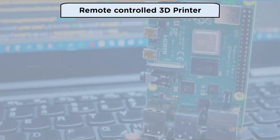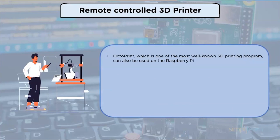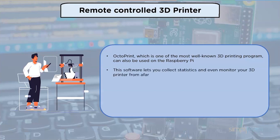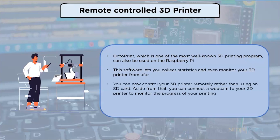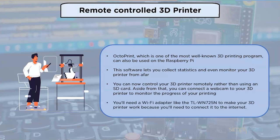Remote control 3D printer: OctoPrint, one of the most well-known 3D printing programs, can be used on Raspberry Pi. This software lets you collect statistics and monitor your 3D printer from afar. You can now control your 3D printer remotely rather than using an SD card. You can also connect a webcam to monitor printing progress. You will need a Wi-Fi adapter like the TL-WL725N to connect it to the internet.